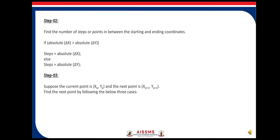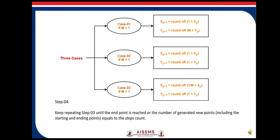Step 3: Suppose the current point is (xp, yp) and the next point is (xp+1, yp+1). Find the next point by following three cases. Case 1: If m is less than 1, then xp+1 equals round of (1 plus xp) and yp+1 equals round of (m plus yp). This is the next point or coordinate. With the help of this case, we can find out the next coordinates or the next point.